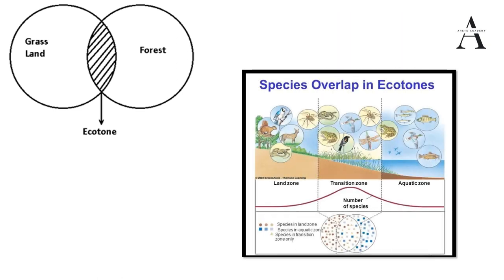Ecotone can be remembered as a zone of junction — like a train junction. Just as Jhansi is a junction where trains from Delhi to southern or eastern India cross, ecotone is a zone of junction or transition area between two biomes or ecosystems. It is a zone where two communities meet and integrate.